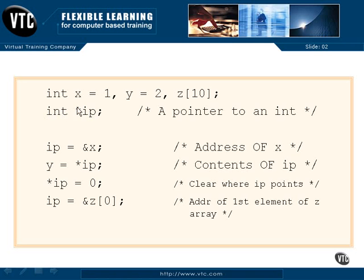To show you that this is a pointer to an integer and then the name. Personally, I grew up learning to put the star next to the variable name so that when I see this together, I know that this is an ip, is a pointer to an integer.